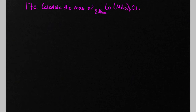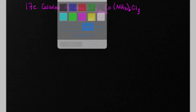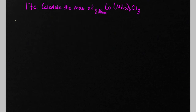Chapter 3, Problem 17e. We want to calculate the mass of 2.86 moles of this copper hexaammonium chloride. The first step we want to do here is to calculate the formula weight using the subscripts in our chemical formula.